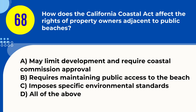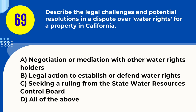Question 68. How does the California Coastal Act affect the rights of property owners adjacent to public beaches? A. May limit development and require coastal commission approval B. Requires maintaining public access to the beach C. Imposes specific environmental standards D. All of the above. Answer: D. All of the above. Explanation: The Coastal Act can limit development, require maintaining public beach access, and impose environmental standards.